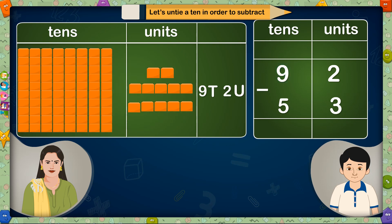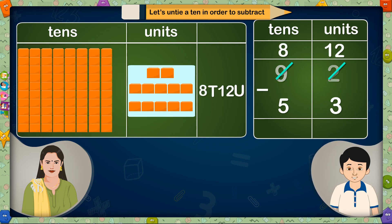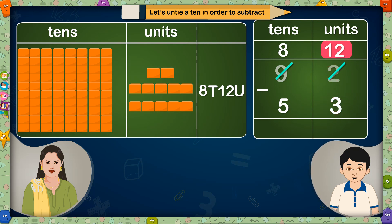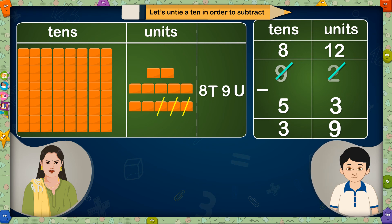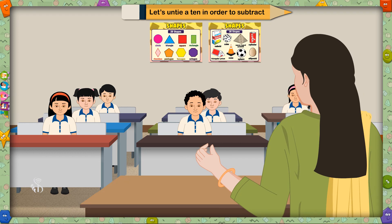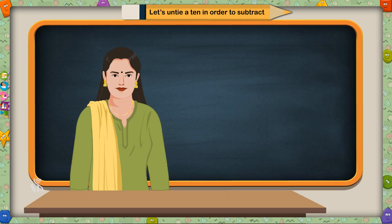So we will have to untie a ten. So only 8 tens will remain here, and we will have 12 units in units place. Reduce 3 units from 12 units and 9 units will remain here. After reducing 5 tens from 8 tens, 3 tens will be left. So 92 minus 53 equals 39. Well done! You have solved it very well. You can practice solving sums at your home in this way.